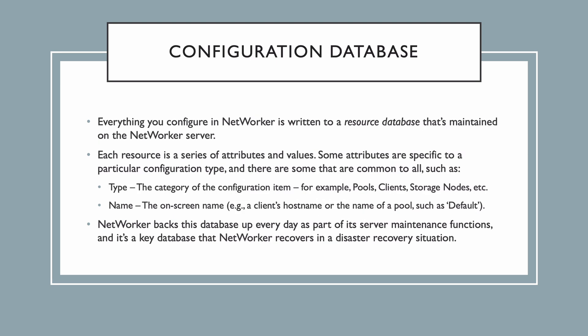Like any backup product, the networker server has a configuration database, which is often referred to as the resource database. Each atomic element within the networker configuration — for example, a pool or a storage node — will have at least one resource. Some elements in networker can have multiple resources. For instance, a physical client might have a resource that defines its file system backup properties, and another resource that defines its database backup properties.